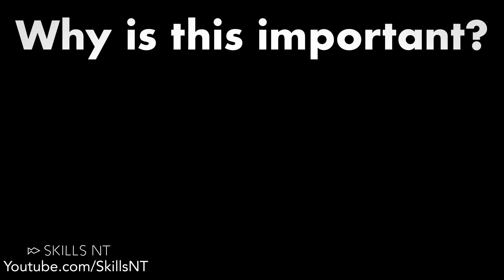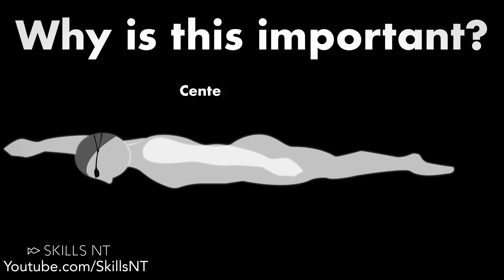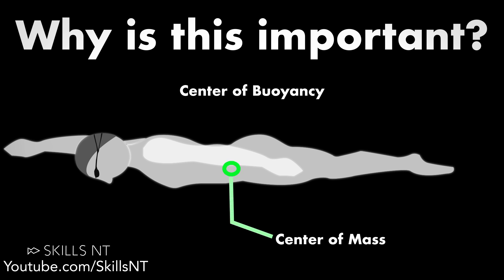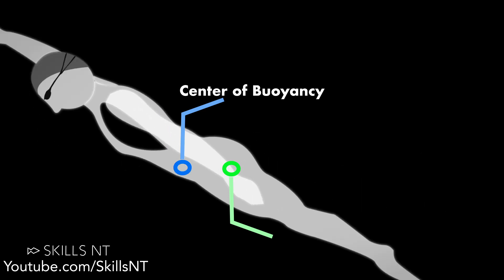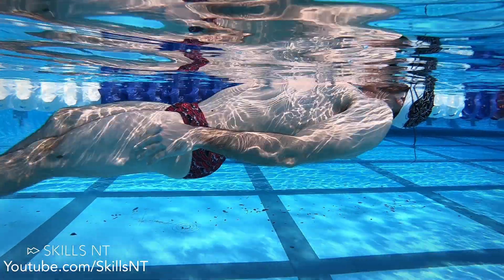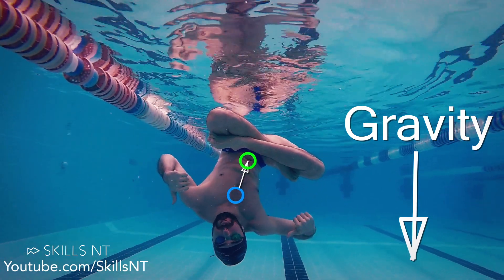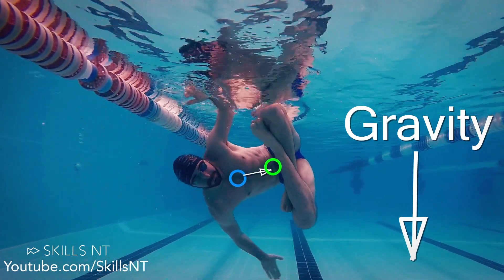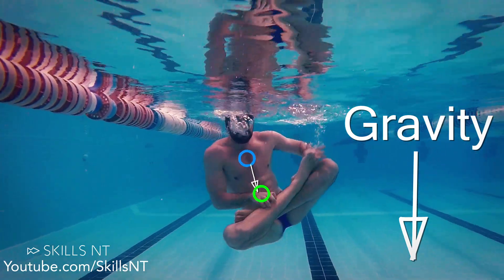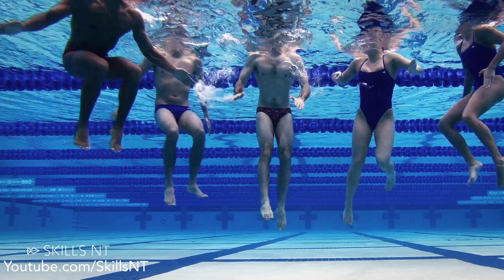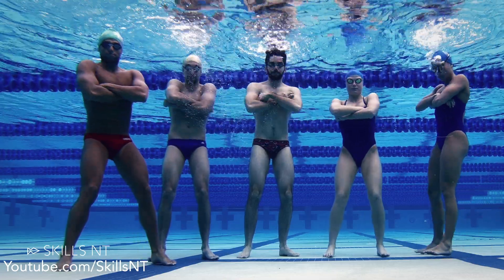Why is this important? When you are swimming you have a center of buoyancy and you always have a center of mass. Your center of mass is very close to your belly button, but your center of buoyancy is close to your lungs. This is because the air in your lungs is not dense at all and it floats more. So if you stand still, these two centers will align with gravity. That is also why if you blow all the air in your lungs, you sink to the bottom of the pool.